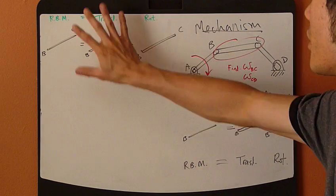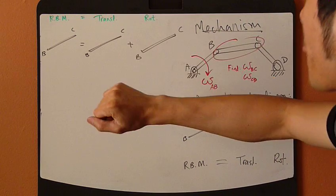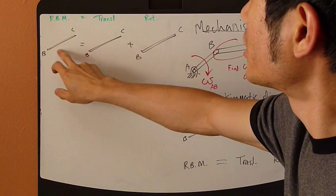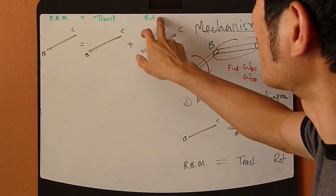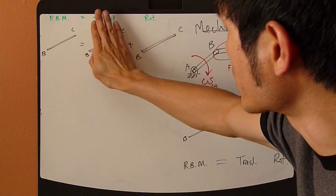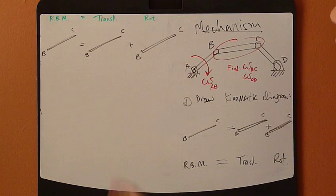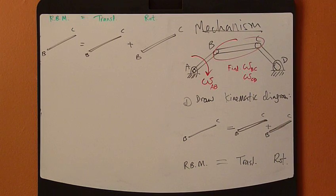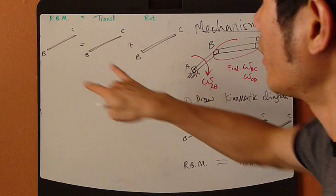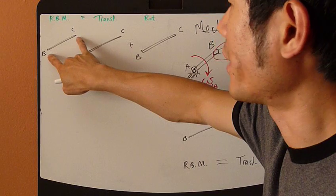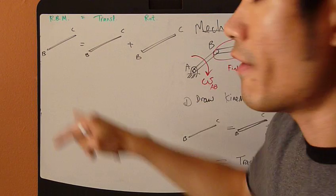Okay, I'll duplicate this picture up here. The rigid body motion equals translation plus rotation - pure translation plus pure rotation. Next thing you do is draw the vectors at each point, the actual velocity vector.